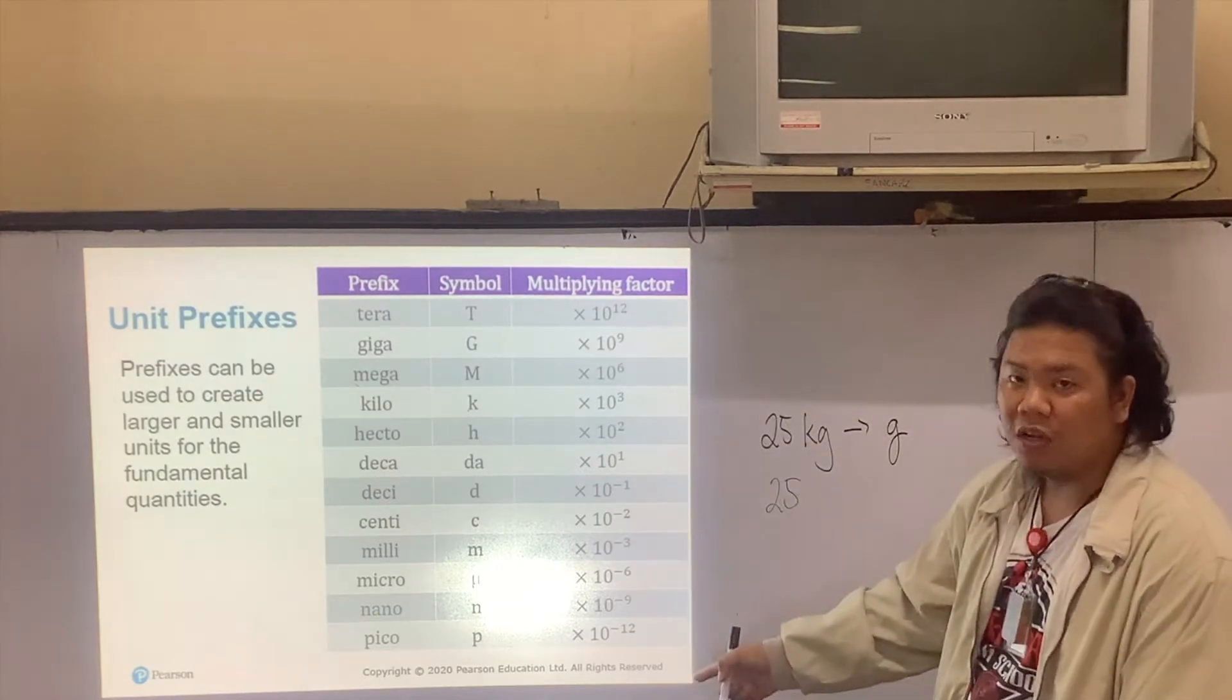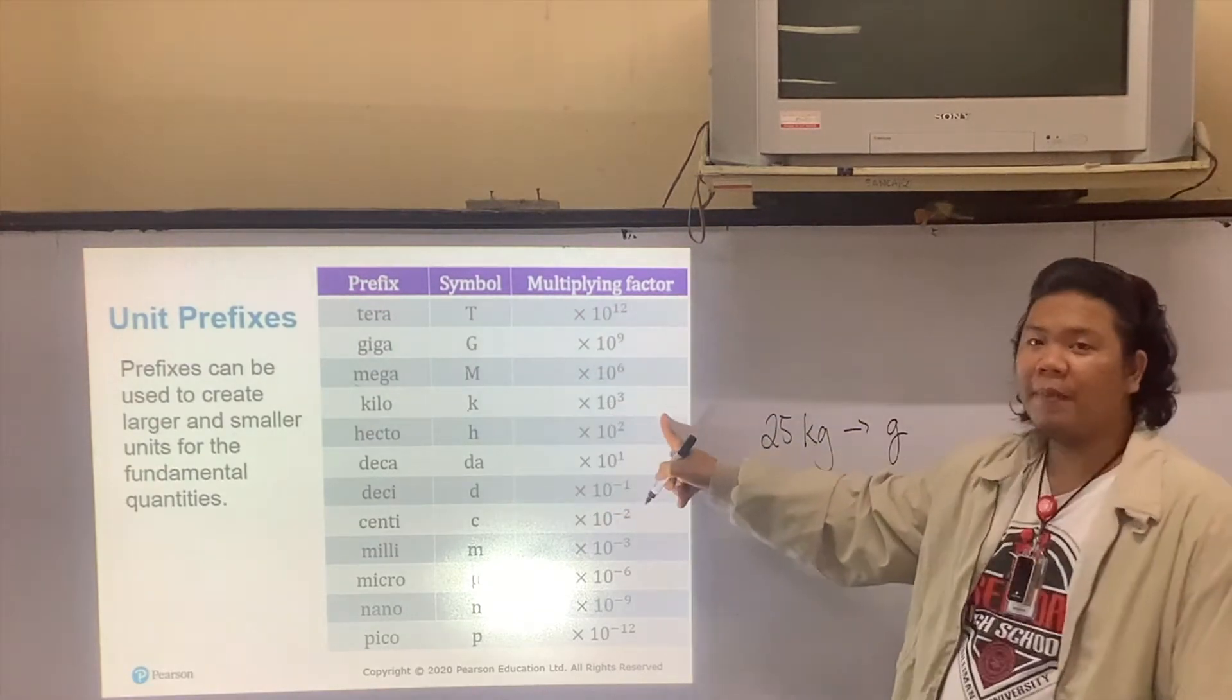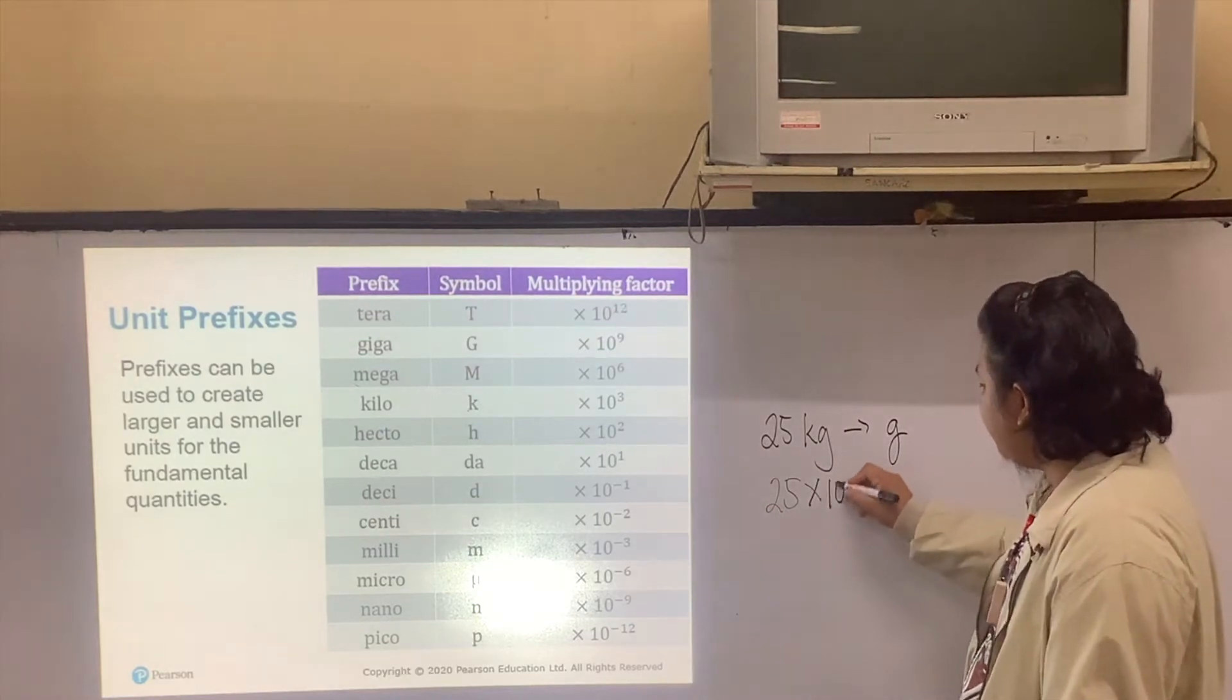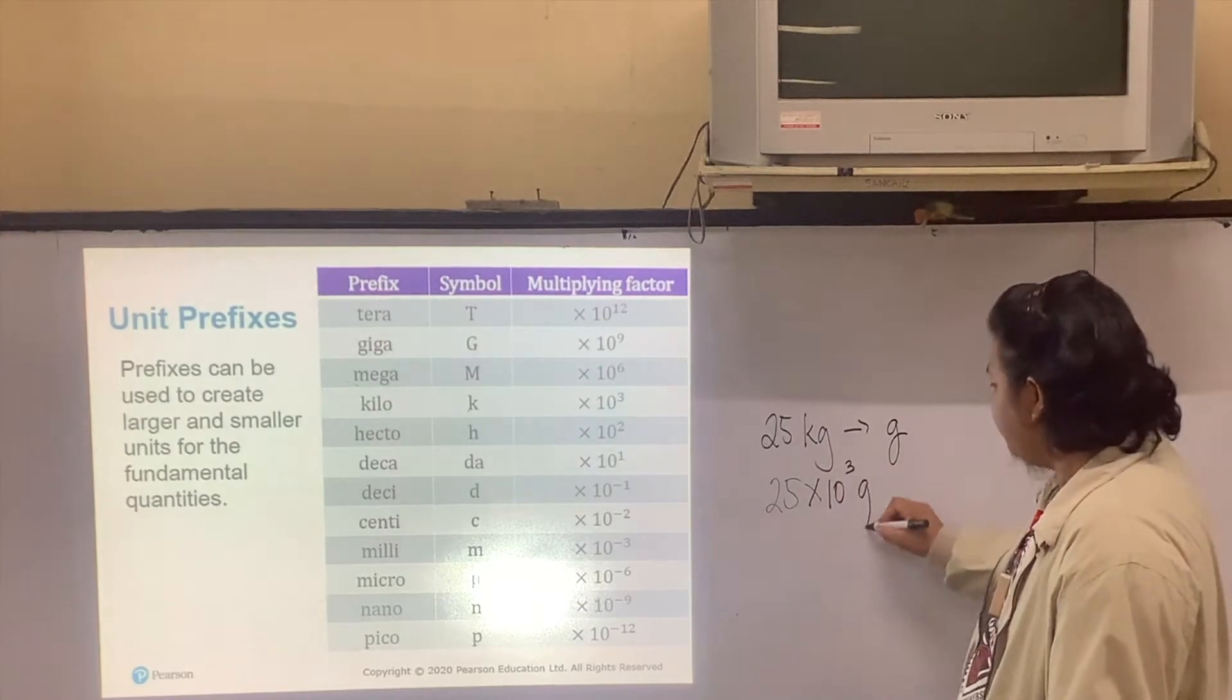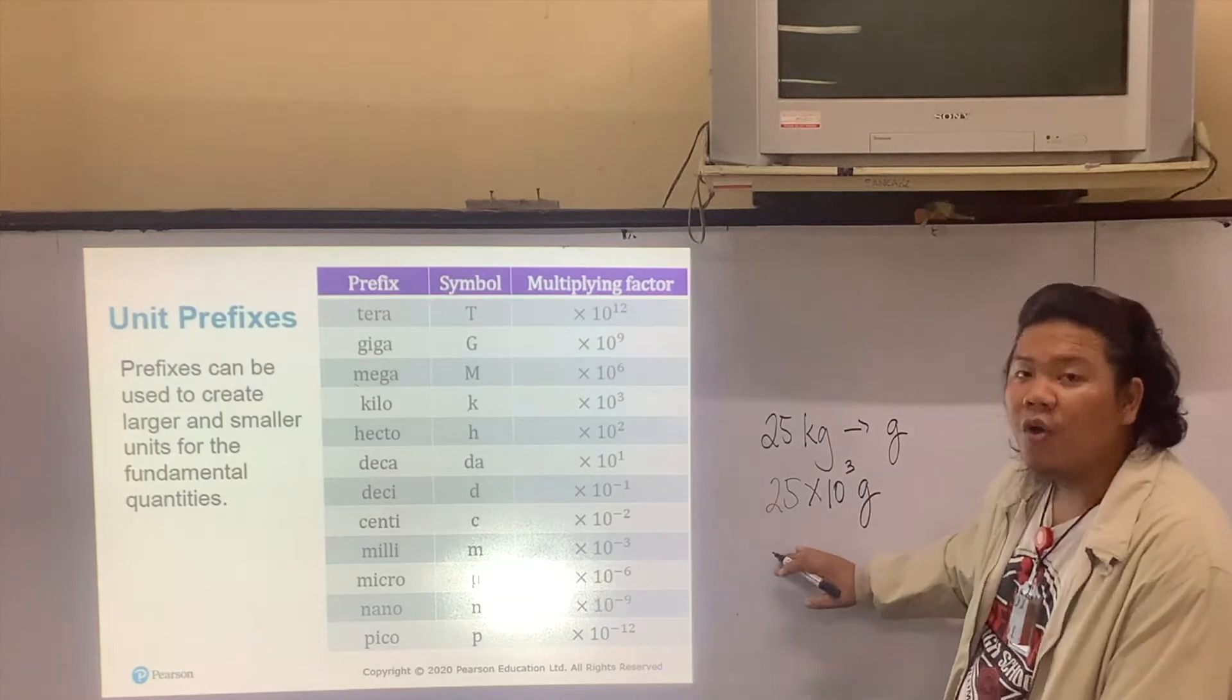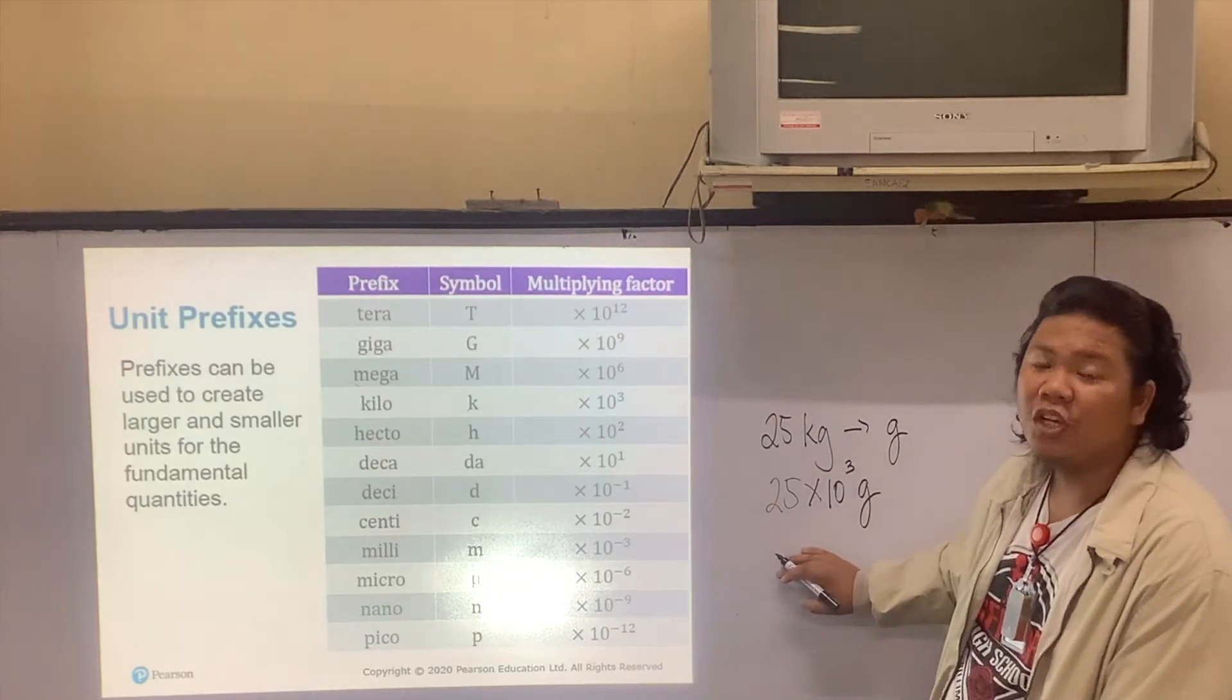Look up the value of the prefix kilo, and that is 10 to the positive 3. I'll just write 10 to the positive 3, and then, of course, grams. I'm practically done converting it. However, we also have to abide by the rules of scientific notation writing.